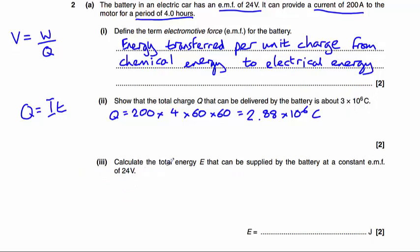Finally, part three, calculate the total energy, E, that can be supplied by the battery at a constant EMF of 24 volts. So now this is where we need our equation here. We know that work done, that's a form of energy transfer, is equal to voltage multiplied by charge.